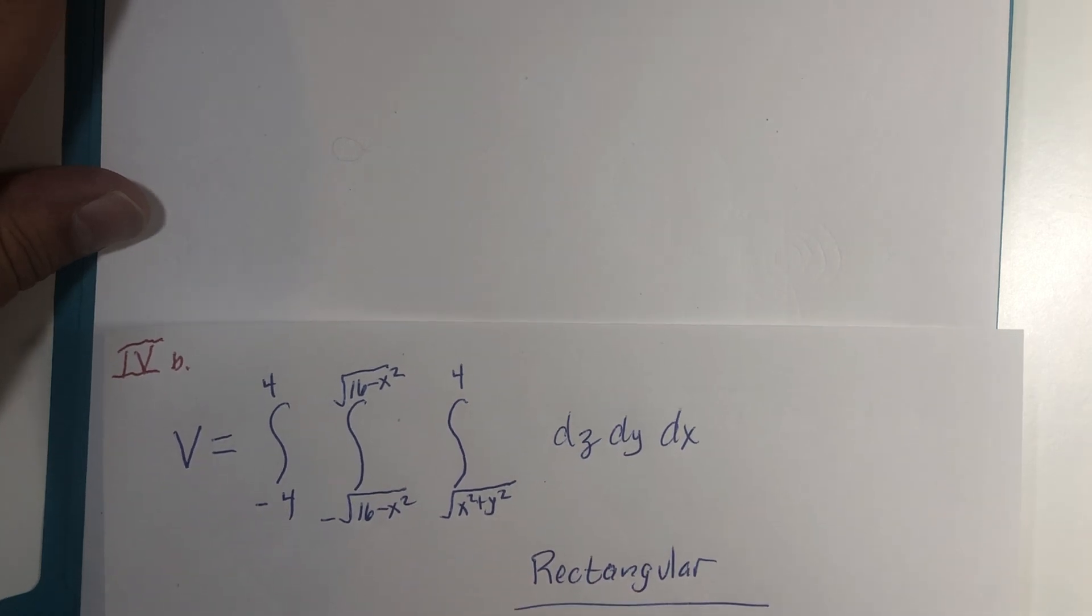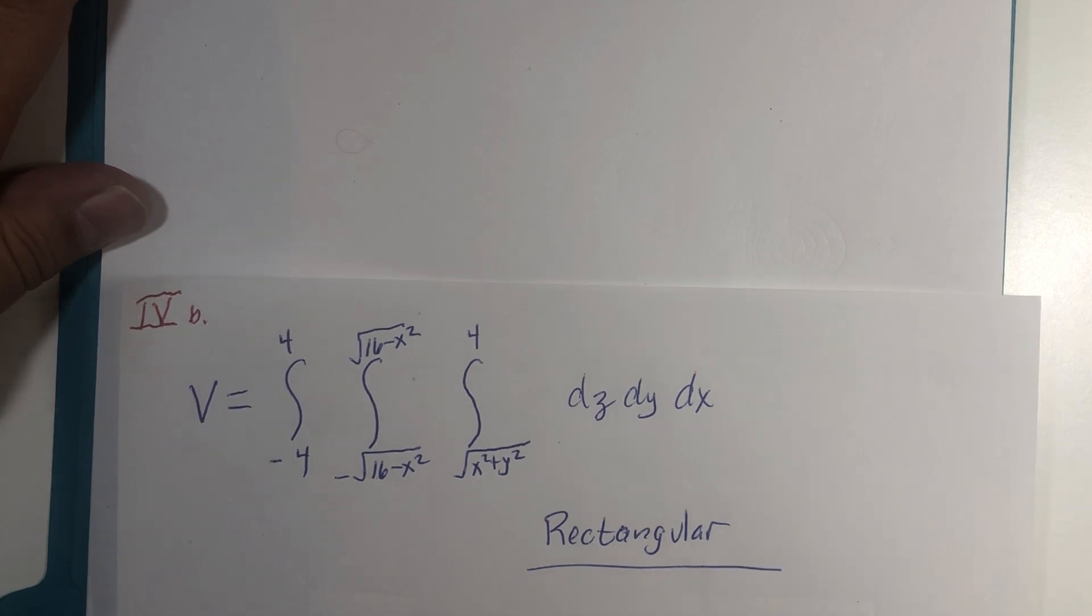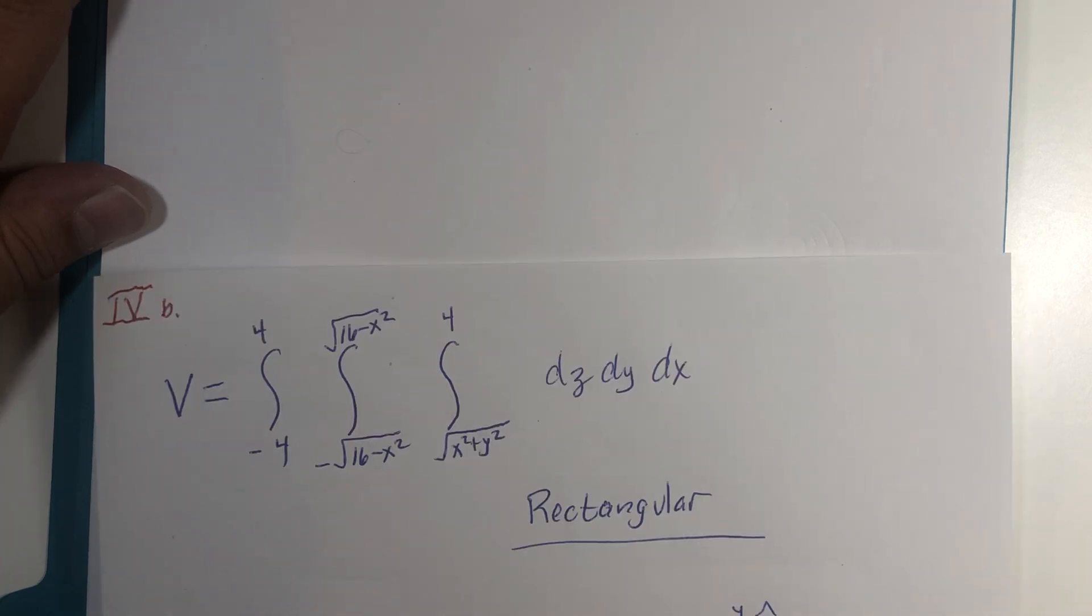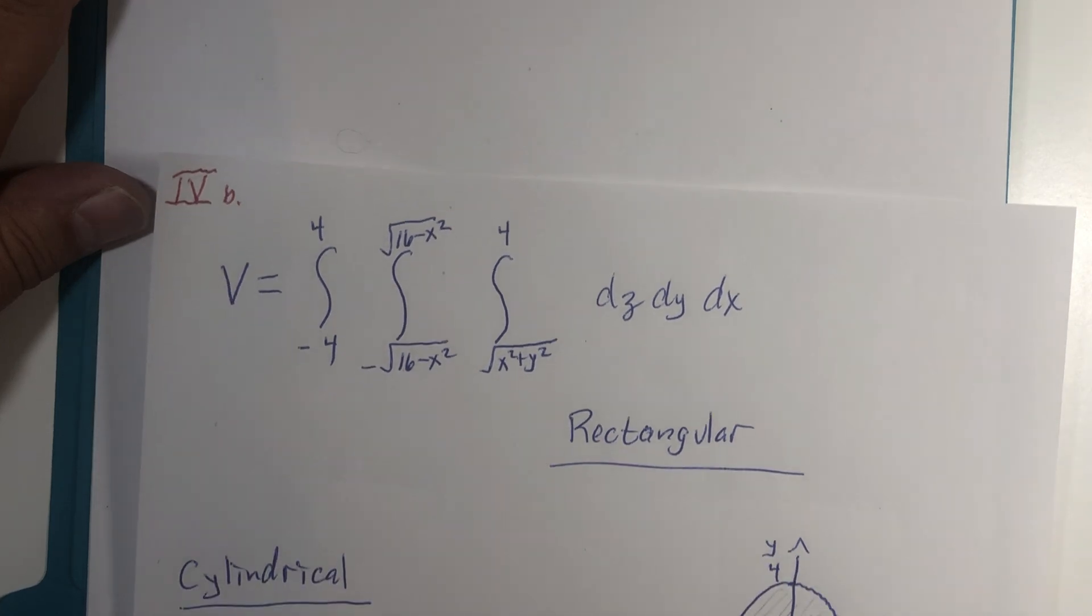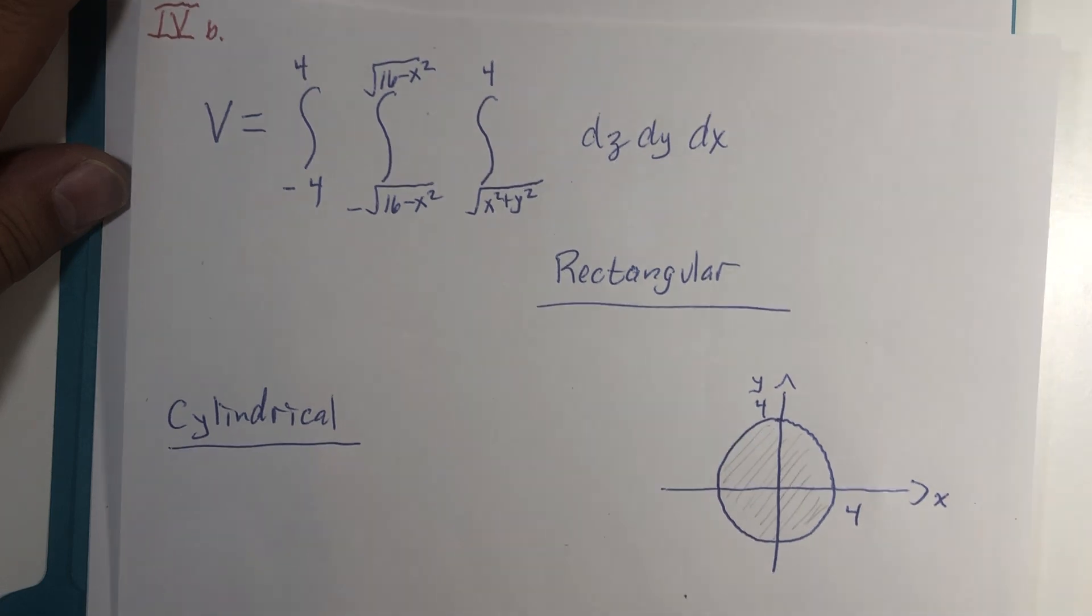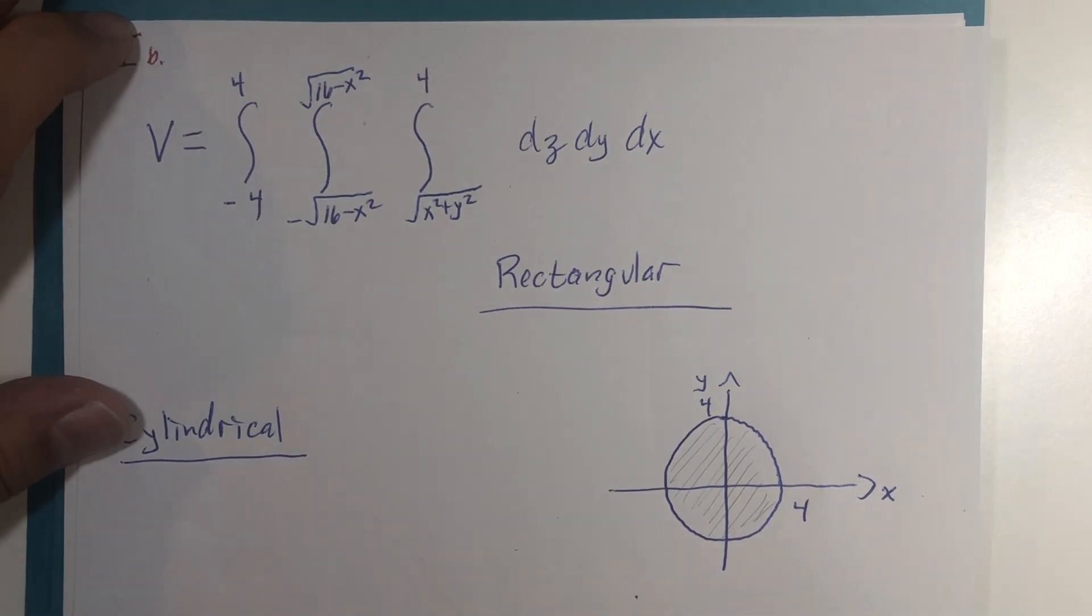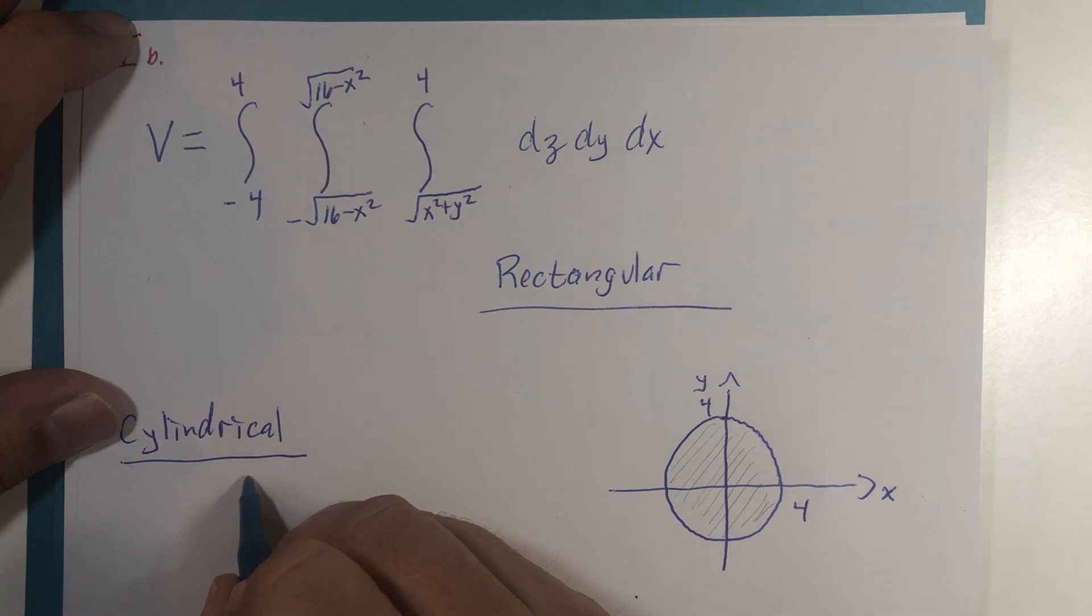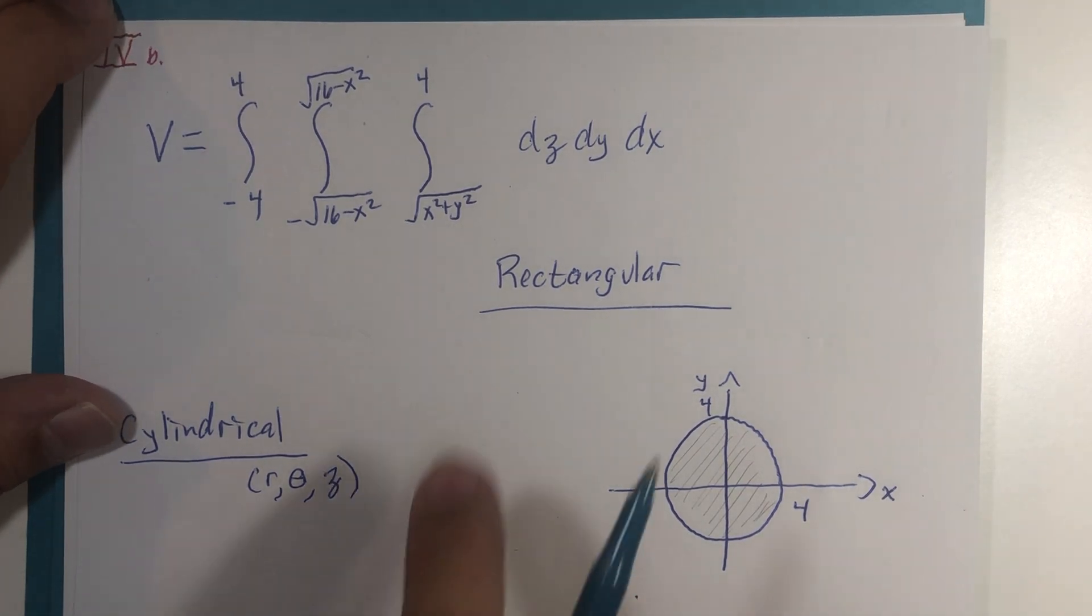So we have this triple integration for volume of our cone, and it's in what we call rectangular form where we're using x, y, and z coordinates. I would like us to consider a coordinate system from our past that was called cylindrical coordinates. Cylindrical coordinates took x and y and converted them to r and theta, but z remained z.